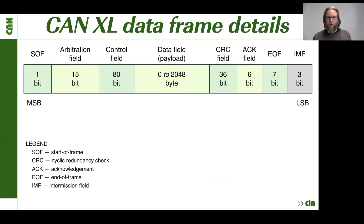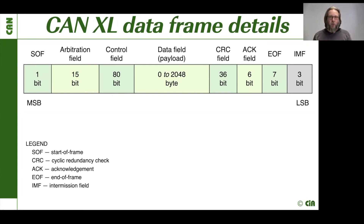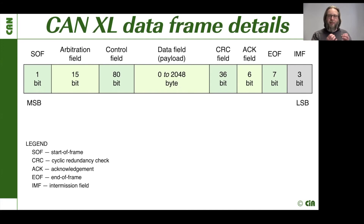We now have only an 11-bit priority ID — we don't have any more 29-bit identifier. But in the control field, we now have a 32-bit additional address field. In the past with the 29-bit identifier, many used the identifier not only for priority reasons but also for address information. Now with CAN-XL, we have our 11-bit identifier which is a dedicated priority identifier, and we have an additional 32-bit address information in there.